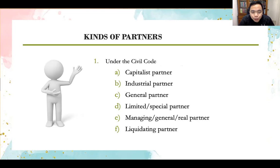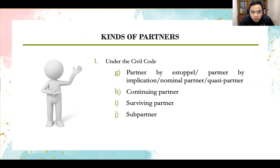There are different kinds of partners under the Civil Code. You have the capitalist partner, whose contribution consists of money or property. The industrial partner contributes labor or service. You also have general partner, limited partner, special partner, managing general or real partner, and liquidating partner. Additionally, there is partner by estoppel, partner by implication, nominal partner, quasi-partner, continuing partner, surviving partner, and sub-partner.